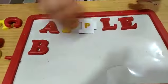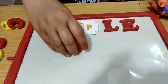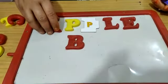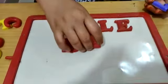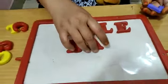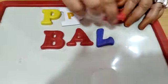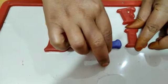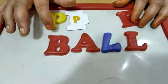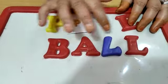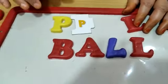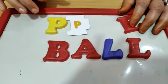Now, B for ball. Then B, A, L, L — B, A, double L. Ball.